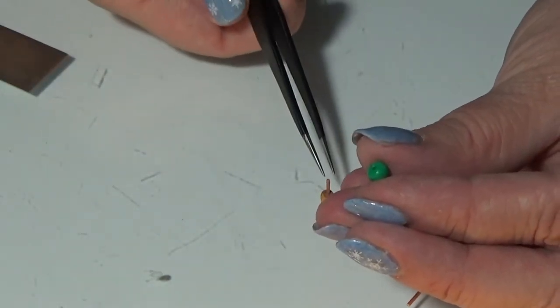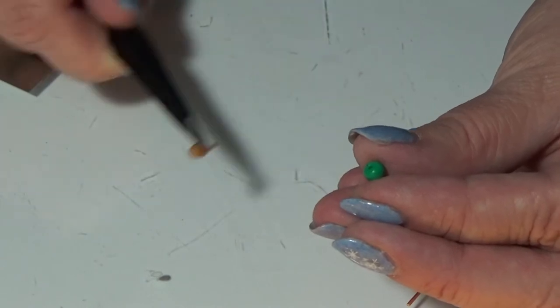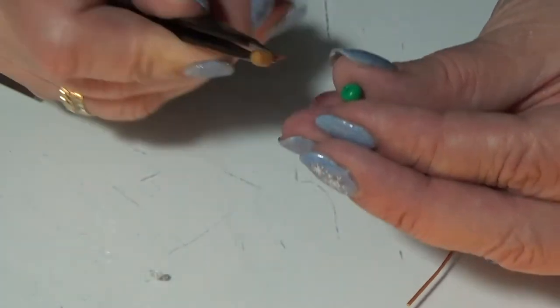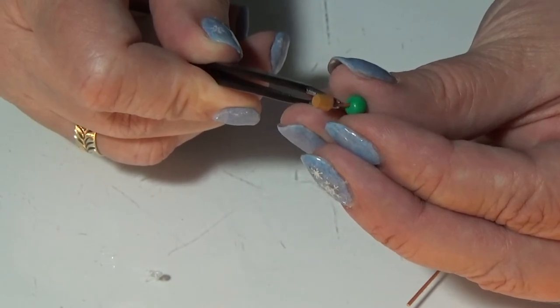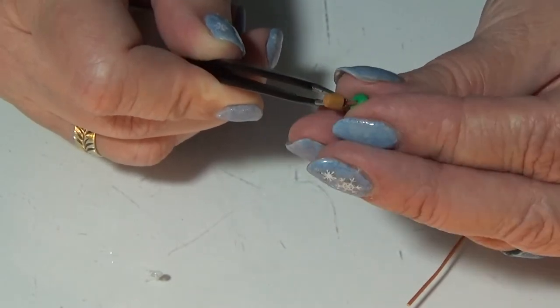Then I take some bacon bond and I'm gluing this little green circle on the other end of the stick, just like you see here.